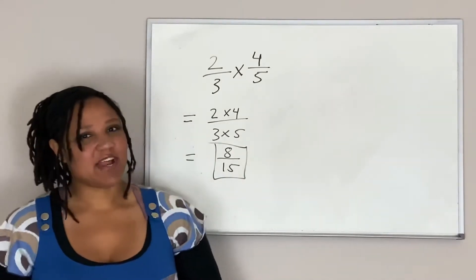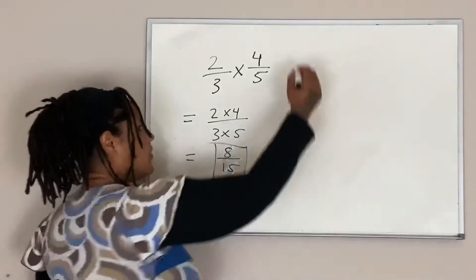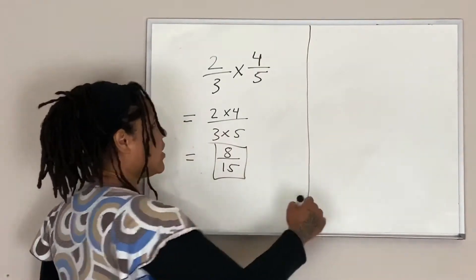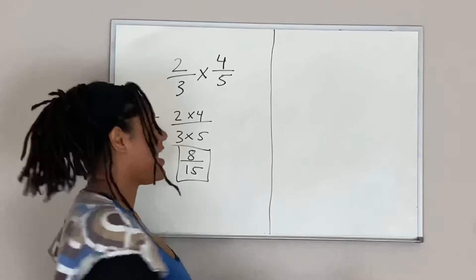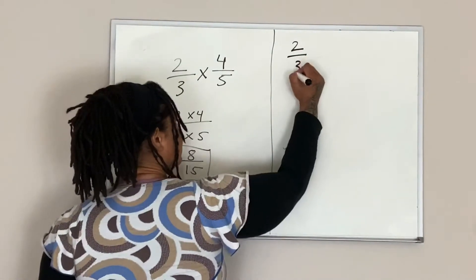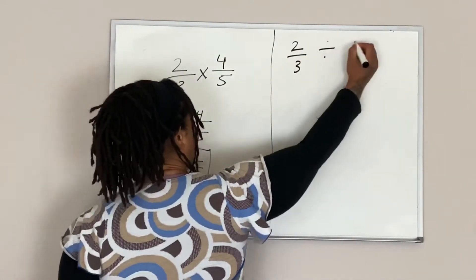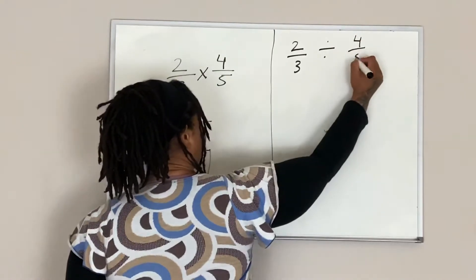What about dividing fractions? I'm going to go ahead and use the same example here. So this time I have 2 over 3 divided by 4 over 5.